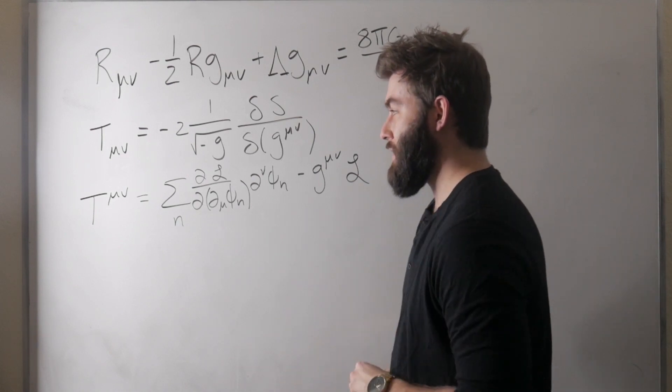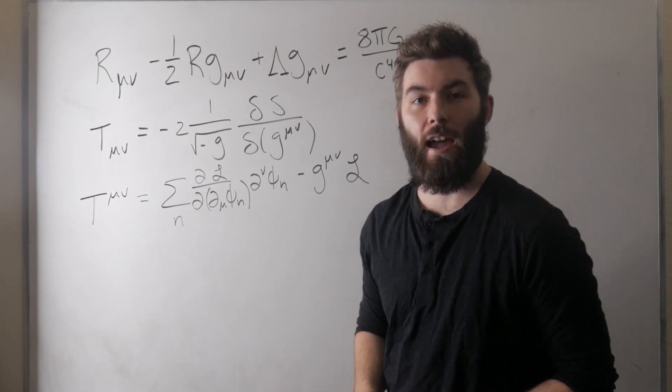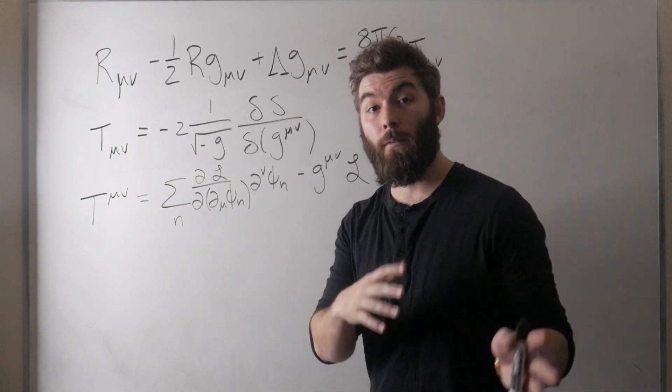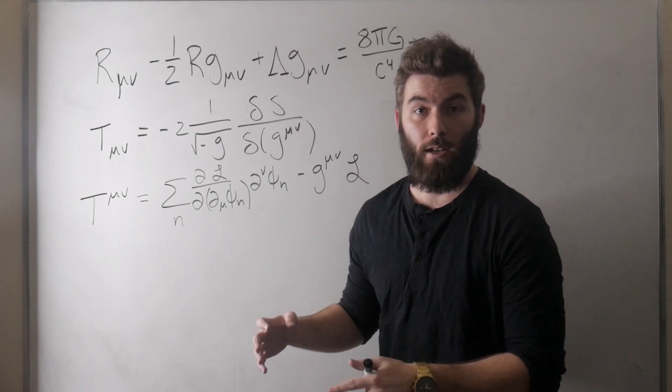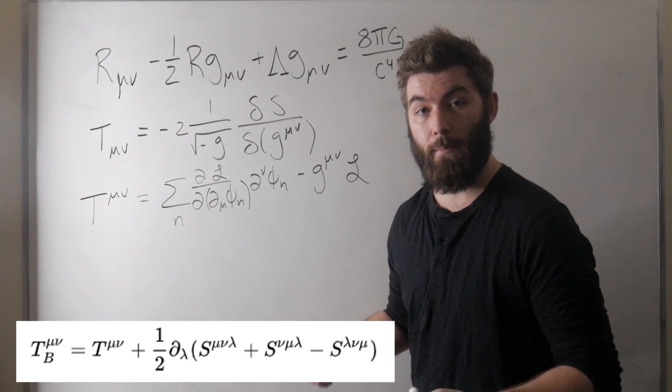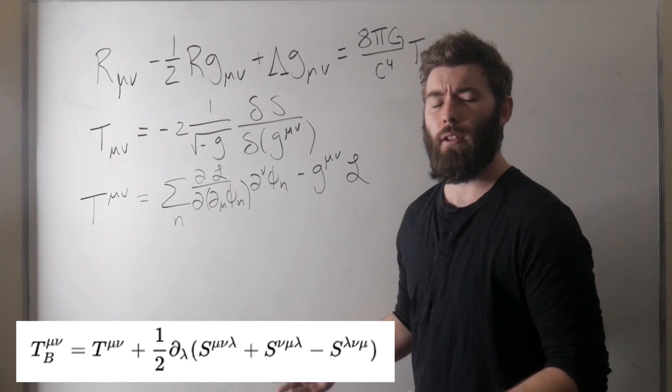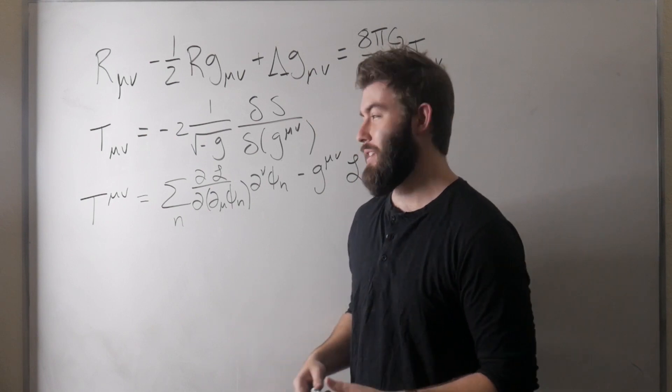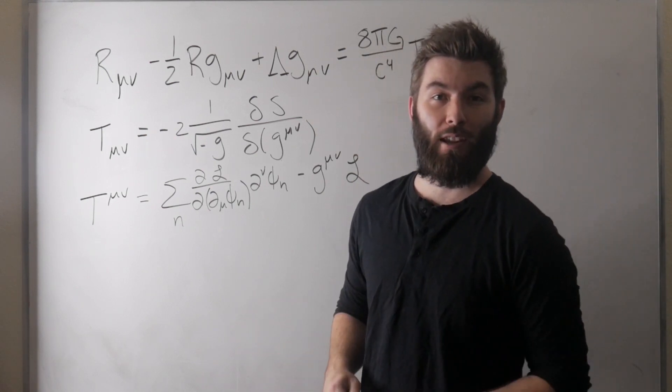So people have gone out of their way to find a way to modify the energy momentum tensor such that it retains its symmetry properties. It's called the Belinfante tensor. But anyways it's also used in quantum field theory it's a bit more subtle.